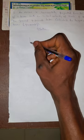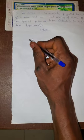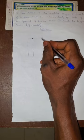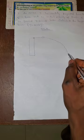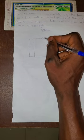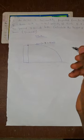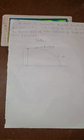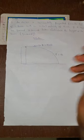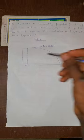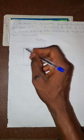Next question: an arrow is projected horizontally from a tower with an initial velocity of 15 m/s. It reaches the ground in 7 seconds. We are asked to find the height of the tower. We use h = ut + ½gt².